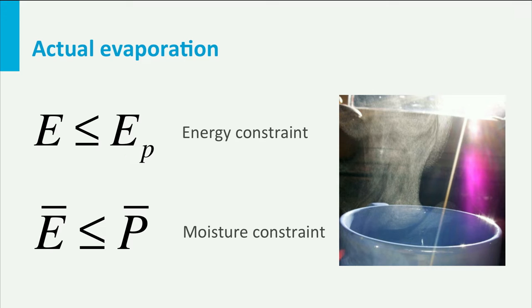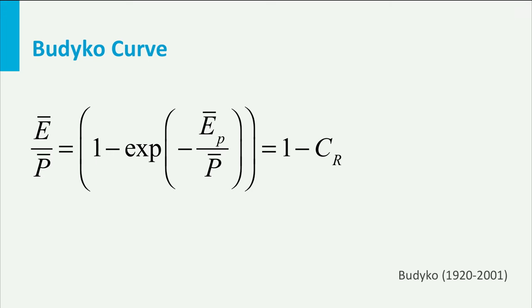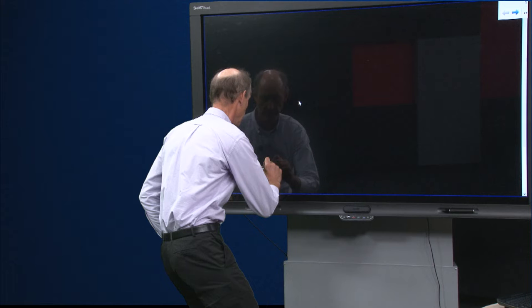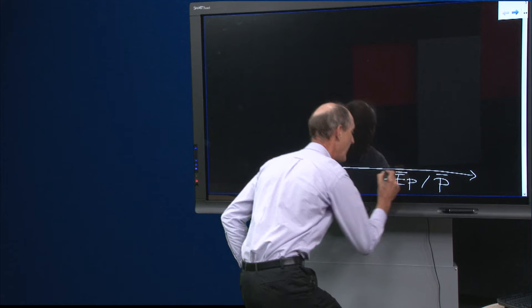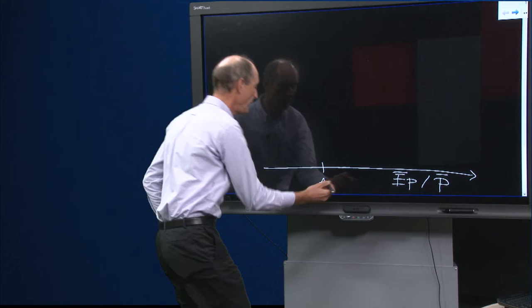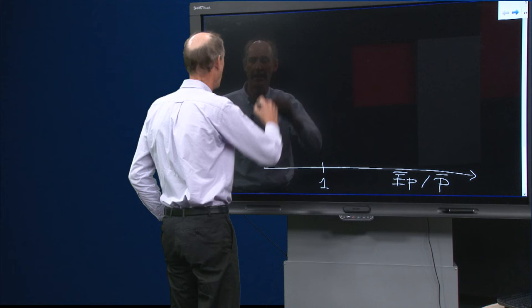These conditions form the asymptotes of the Budyko curve. Budyko developed a simple mathematical form to describe the relation between average annual evaporation, precipitation and potential evaporation. For the Budyko curve, we have a relation between the aridity — defined by the potential evaporation divided by the rainfall — and these are average annual values. This aridity equals 1 at the transition point: left of 1 you are in a wet climate, right of 1 you are in a dry climate.